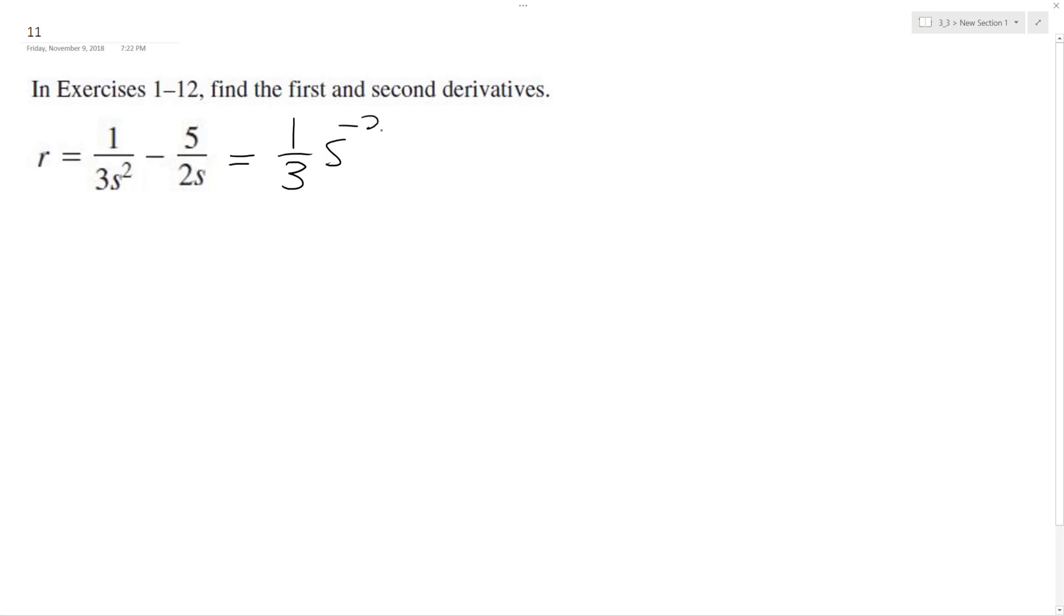So 1 3rd S raised to the negative 2nd minus 5 over 2 S raised to the negative 1. Okay, so r prime is going to be equal to negative 2 times 1 3rd so negative 2 3rds S raised to the negative 3 minus, or bring down the negative 1 here so this becomes a positive 5 halves S raised to the negative 2.